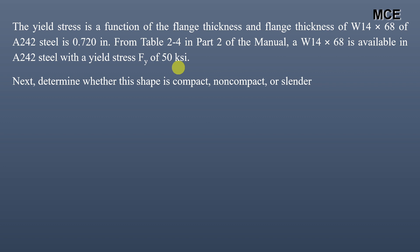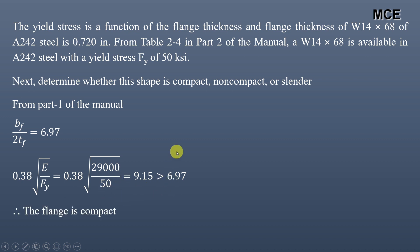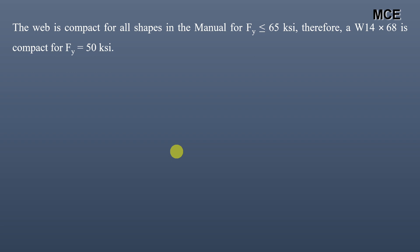Before finding the flexural strength, we need to determine whether this shape is compact, non-compact, or slender. From Part 1 of the manual, BF divided by 2 times the flange thickness equals 6.97, which is less than 0.38 times the square root of E over FY, whose value is 9.15. Since 6.97 < 9.15, the flange is compact. The web is compact for all shapes in the manual with yield stress less than or equal to 65 KSI, and our beam has 50 KSI. Therefore, W14×68 is compact.